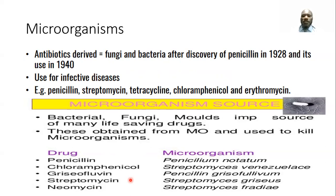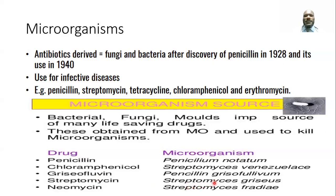Examples include penicillin from Penicillium notatum, chloramphenicol from Streptomyces venezuelae, griseofulvin from Penicillium griseofulvum, streptomycin from Streptomyces griseus, and neomycin from Streptomyces fradiae. These are microorganisms and the list of drugs that can be obtained from them.